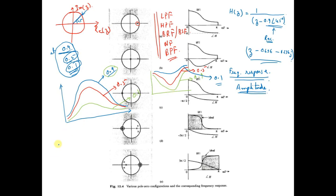If you get an exam question to show the radial effect of positioning of poles and zeros: for a 5-mark question, do all the numericals for poles and zeros. For a 3-mark question, take at least 3 positions for one pole, do the numerical, and explain the effect for zeros. For a 2-mark question, just draw the curves.